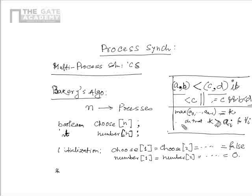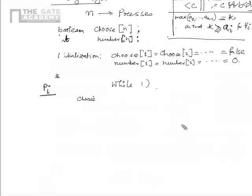After defining these relations and data structure initialization, we look at the code segment for process Pi. The code uses a while(true) loop. First, choose[i] is set to true — meaning it was false initially, and when the process tries to enter the critical section it sets its choose variable to true. Then number[i] is assigned as max of all other processes' number values.